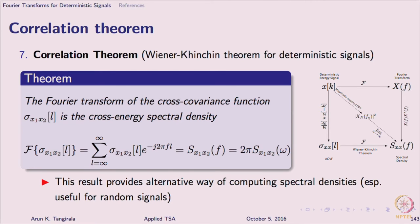The figure on the right shows how you can obtain the cross energy spectral density in different ways. I am only showing this for auto energy spectral density, but the same applies to the cross one as well. To arrive at the auto energy spectral density, for example, I can take the Fourier transform and simply take the squared magnitude — that is one route. The other route is to take the auto covariance and take the Fourier transform. There is also another route we will talk about later, but those are the two main routes.